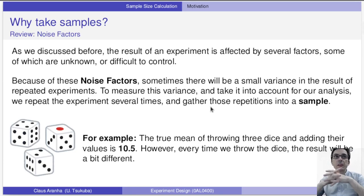So the result of an experiment is affected by several factors, some of which are unknown or difficult to control. Because of these noise factors, sometimes there is a small variance in the result of repeated experiments. So when you do an experiment two times in a row, the result is not exactly the same. To measure this variance, we repeat the experiment several times and gather those repetitions into something that we call the sample.